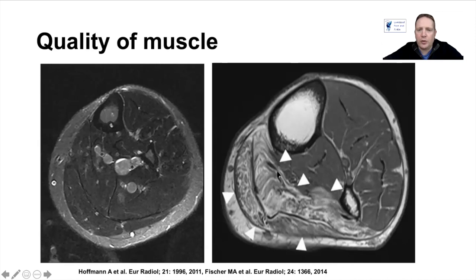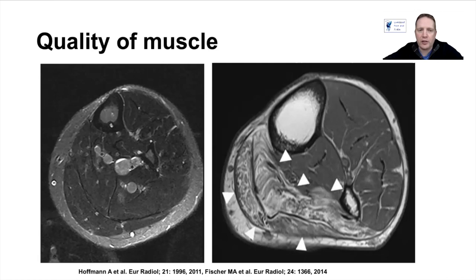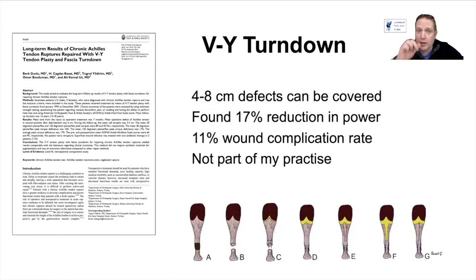If you are treating chronic ruptures, an MRI beforehand is important to diagnose whether there is fatty infiltration within the muscle itself. If there is fatty infiltration, that muscle is no longer functional, so doing a primary repair or repair with an allograft to the gastrocnemius or soleus may not be functional. If you've got fatty infiltration, an FHL transfer would be required regardless.